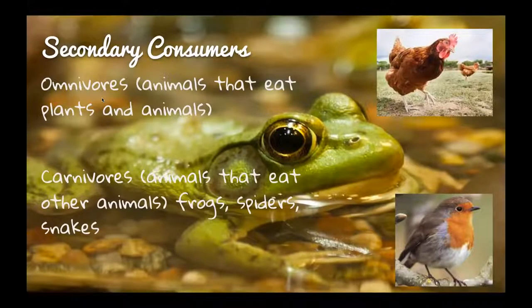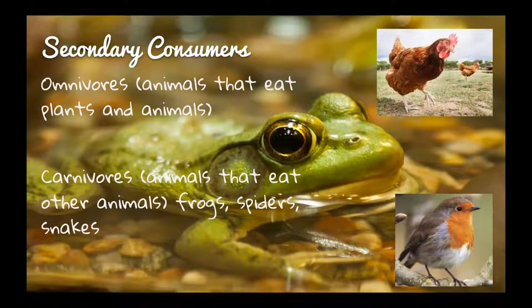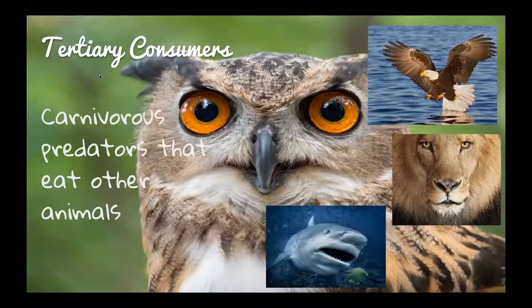Then we have secondary consumers, which eat second. They can be omnivores — animals that eat plants and animals — like chickens and birds. Chickens love seeds but also love mealworms, so they eat insects, making them omnivores. Carnivores are also secondary consumers: animals that eat other animals, like frogs, spiders, and snakes. Even though they are secondary consumers, many of these animals are quite small.